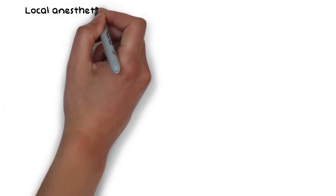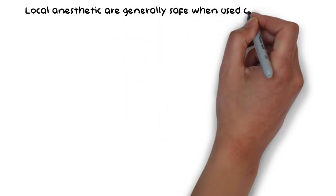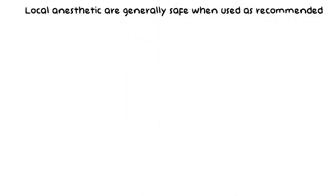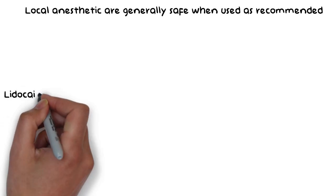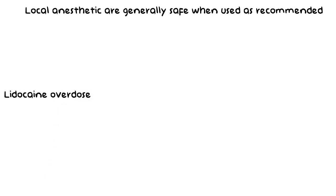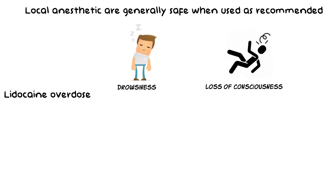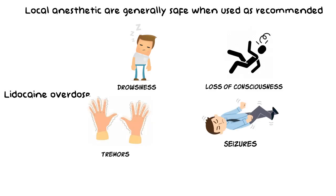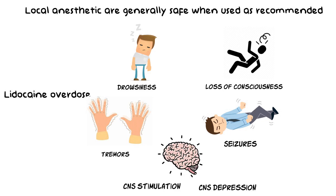Although, as mentioned in previous videos, local anesthetics are generally very safe when used as recommended. However, as with any drug, they too can cause problems when used inappropriately. The first signs and symptoms of Lidocaine overdose may include drowsiness, leading to loss of consciousness and respiratory arrest. Muscle tremor and seizures are also commonly known to occur with increasing blood levels of Lidocaine, along with other local anesthetic side effects involving CNS stimulation followed by CNS depression.